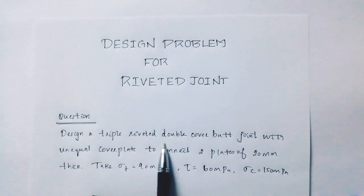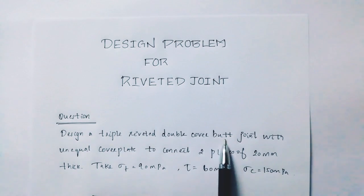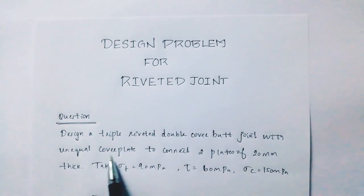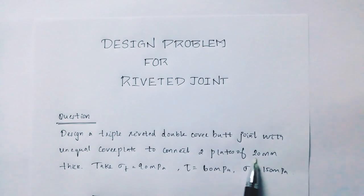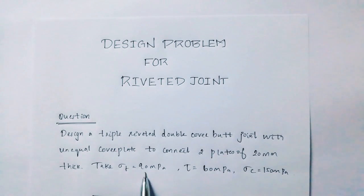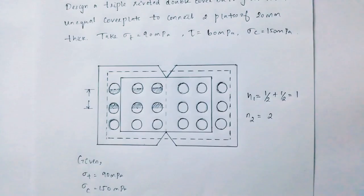Design a triple riveted double cover butt joint with unequal cover plate to connect 2 plates of 20 mm thick. Take Sigma T equal to 90 MPa, Tau equal to 60 MPa, Sigma C equal to 150 MPa.